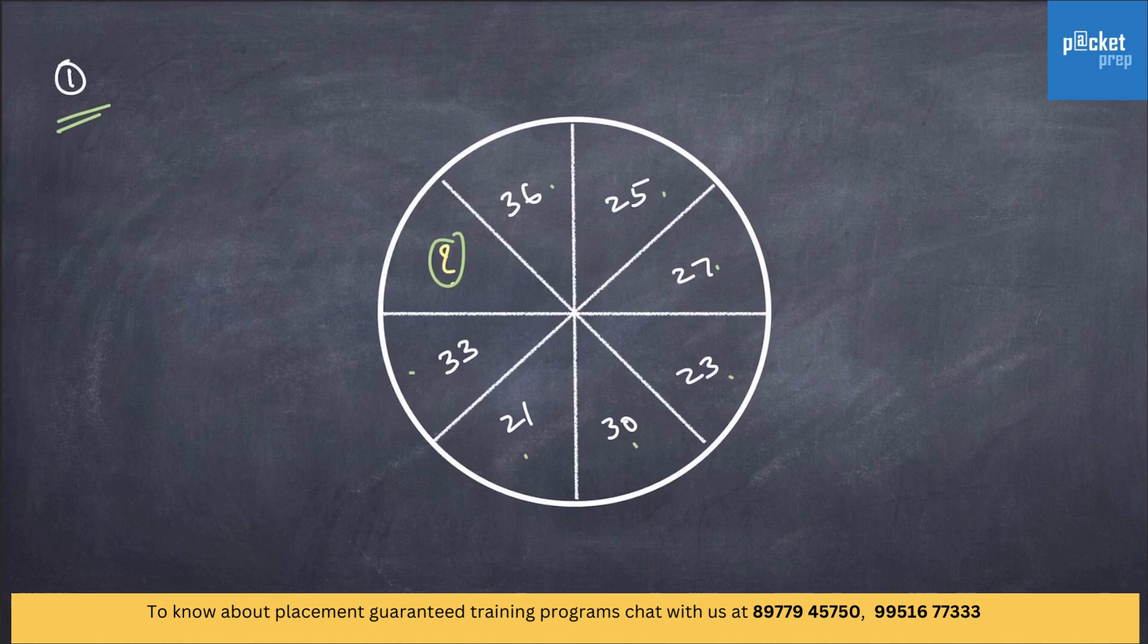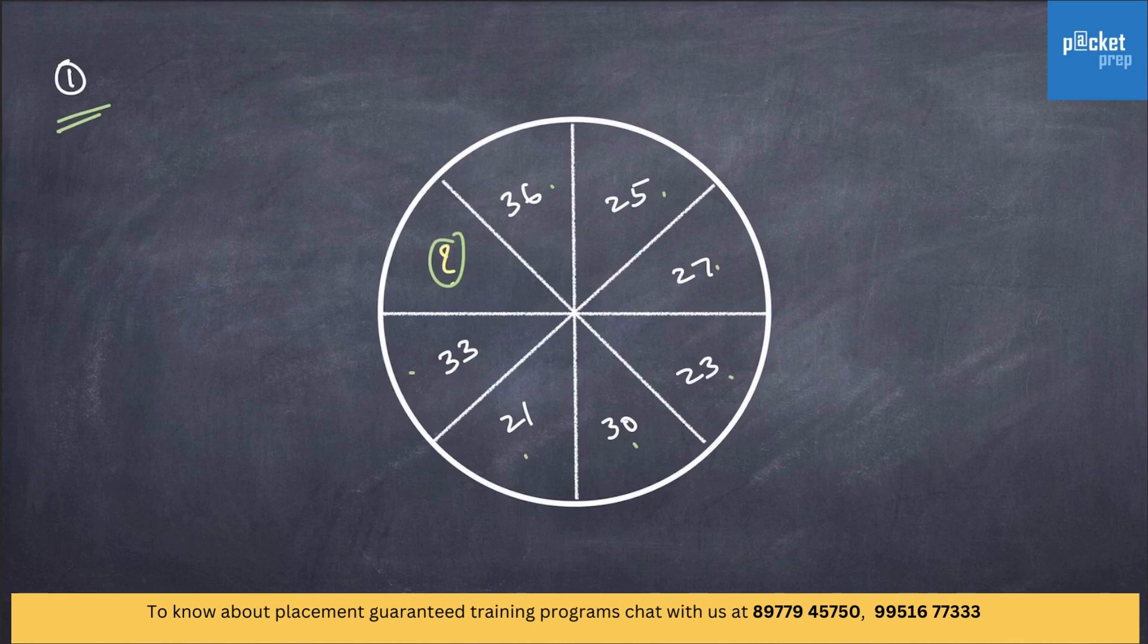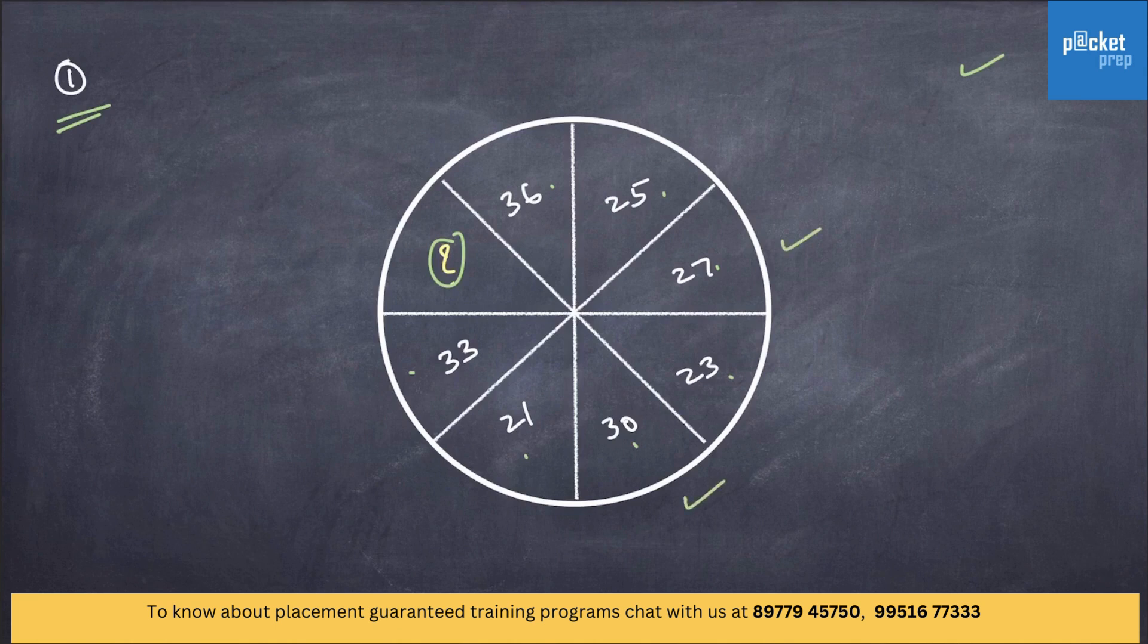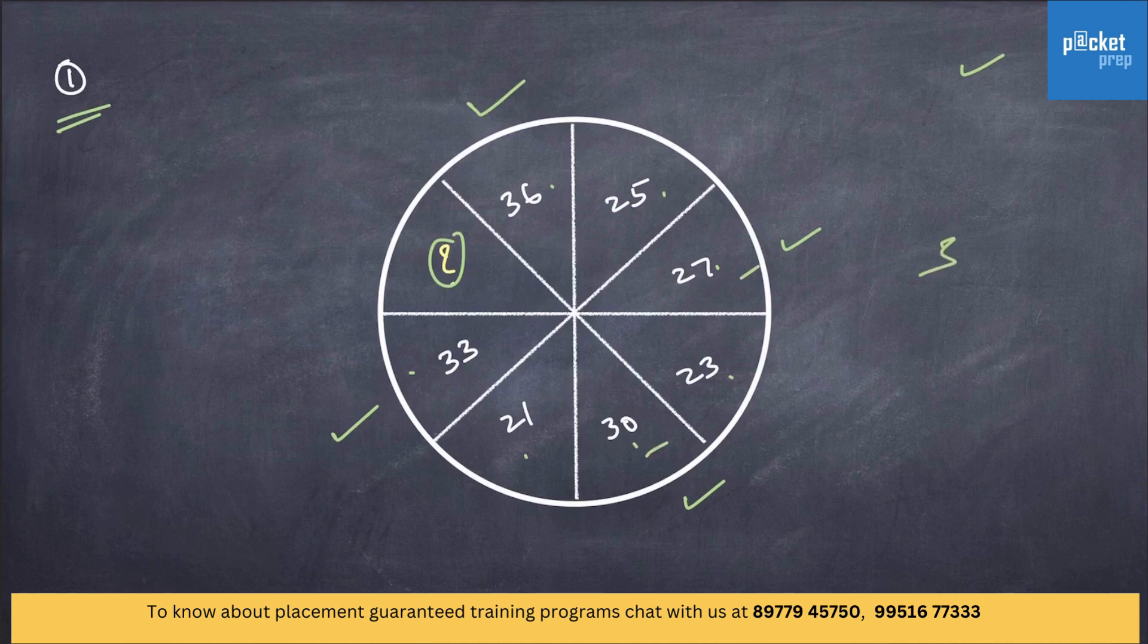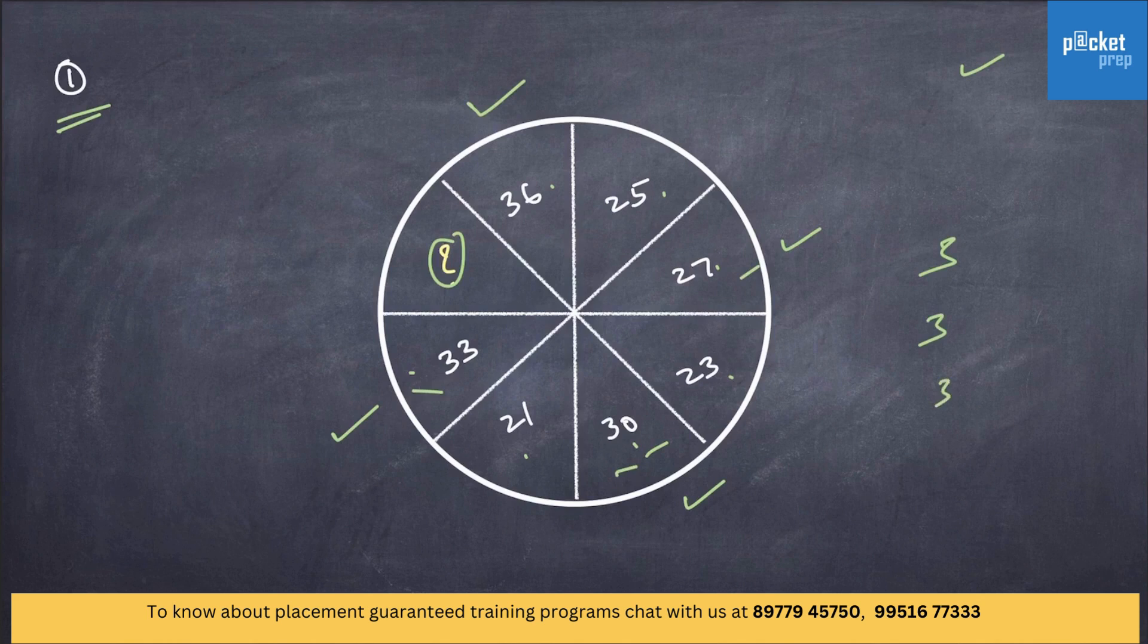As I said earlier, there is no certain pattern to be followed in these questions. For example, have a look at alternative numbers in this question. The difference between 27 and 30 is 3, 30 and 33 is 3, 33 and 36 is also 3.